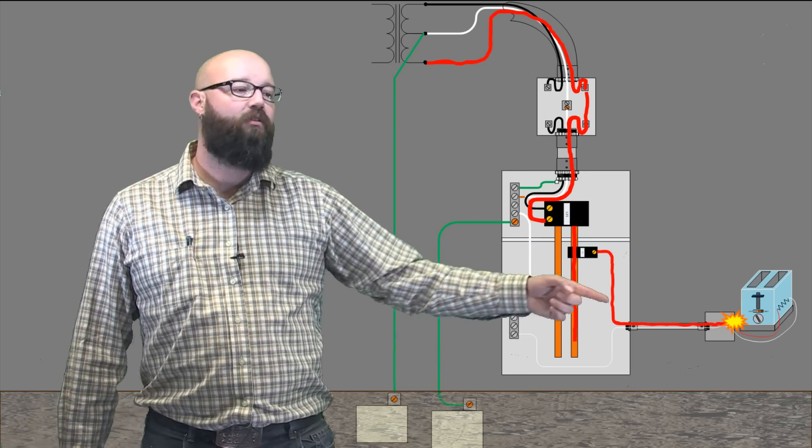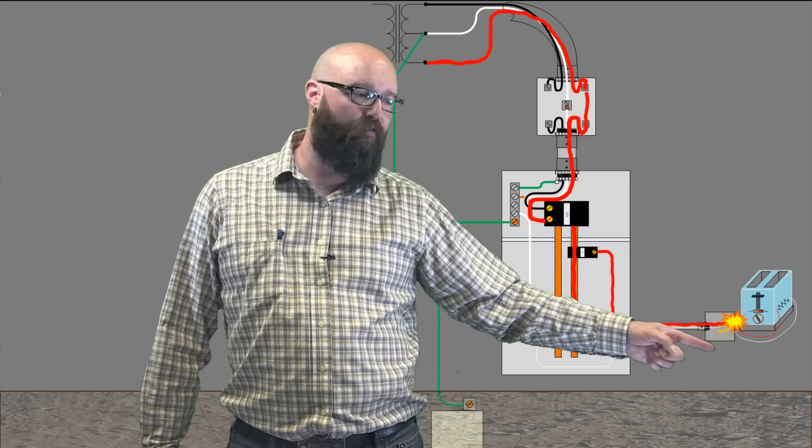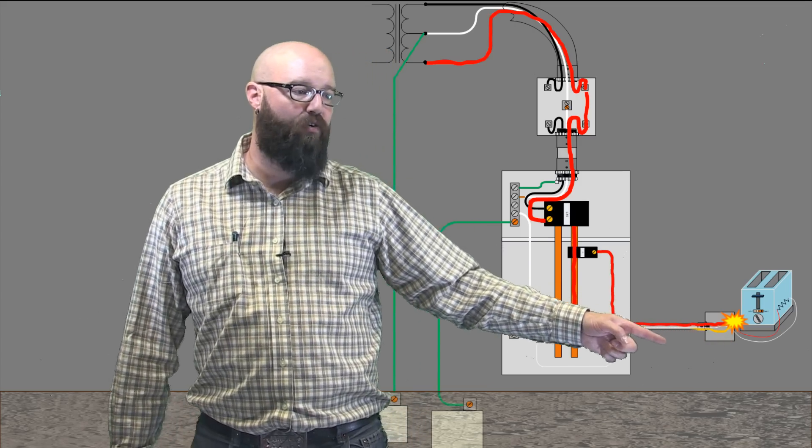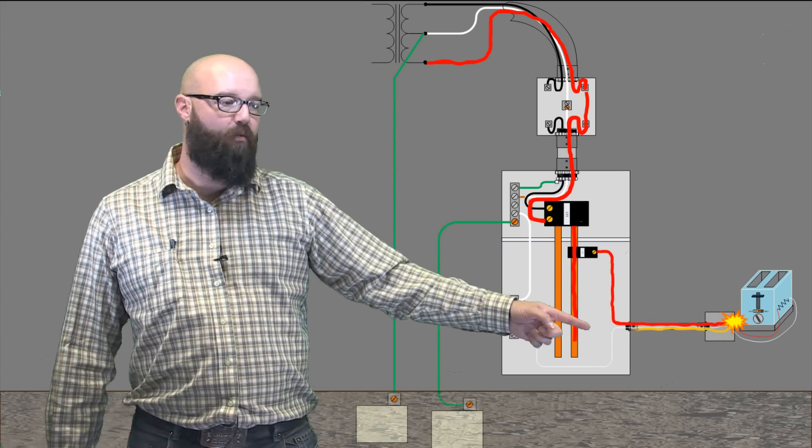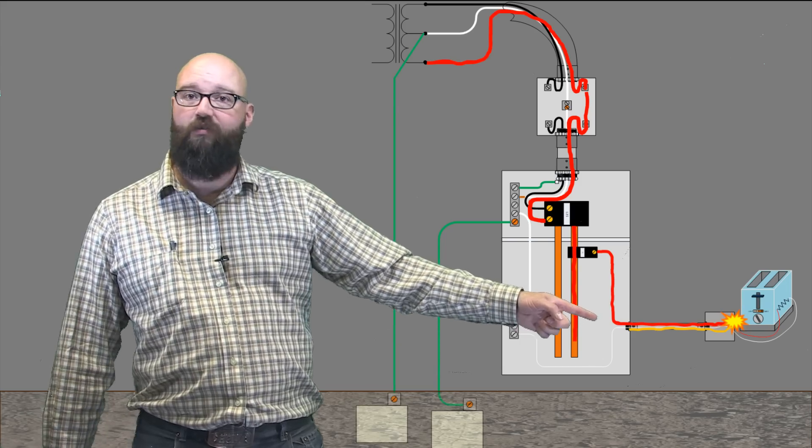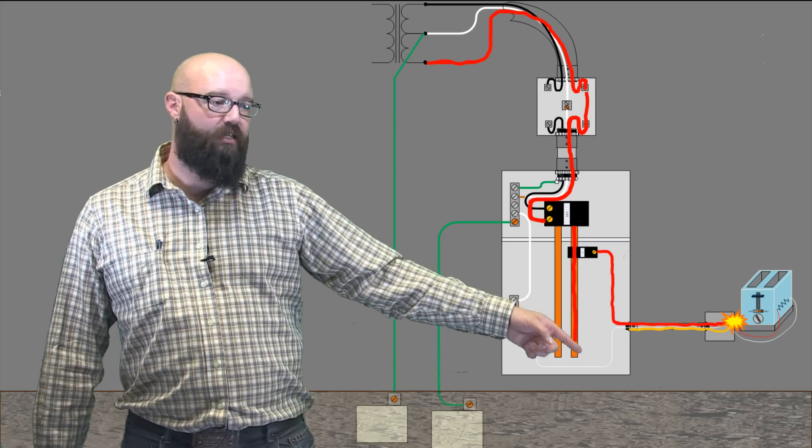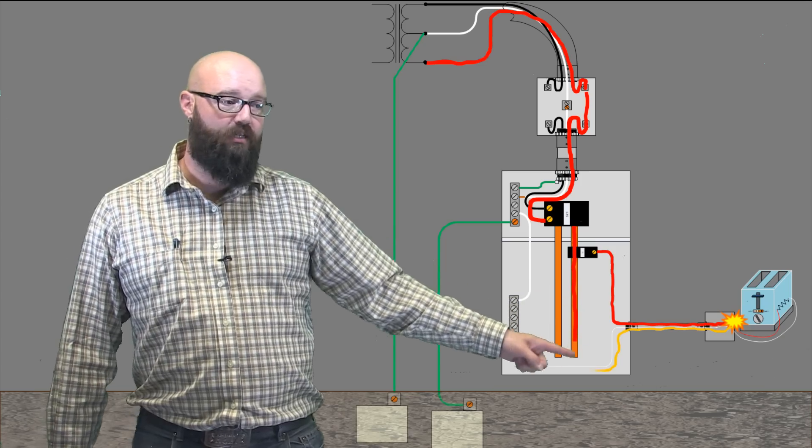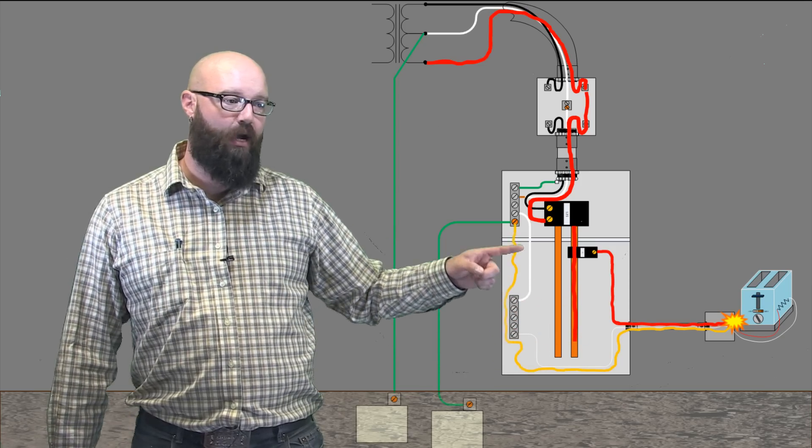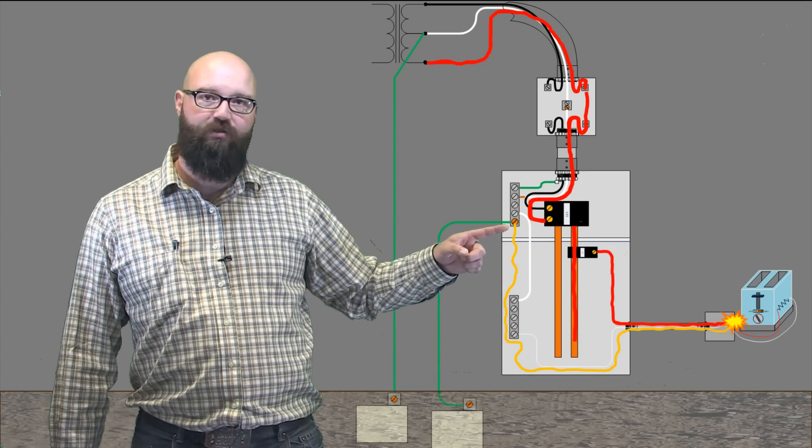Again, we have our fault. Our fault current is going to travel back on our box. It's going to travel back on our EMT or our metal raceway or our bonding conductor if it's a Lumex or something like that. It's going to make its way to this panel. This panel is going to conduct that fault current back again up to this point, our brass screw again.